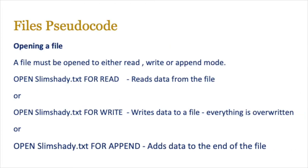Okay, so start looking at the pseudocode for opening a file. A file must be open to either read, write, or append. For example, if I wanted to open my slimshady.txt file for read, I would just write it like that: OPEN in uppercase, the name of the text file, and FOR READ mode. And if I want to do write, it's exactly the same process, but I just write FOR WRITE in uppercase. And in this case everything on the original file is overwritten. Or if I wanted to append or add data to the end of the file, I would use the FOR APPEND mode which allows me to add data to an existing file.